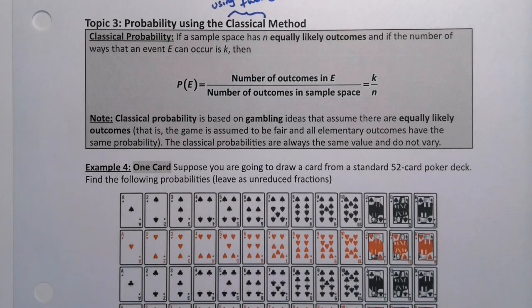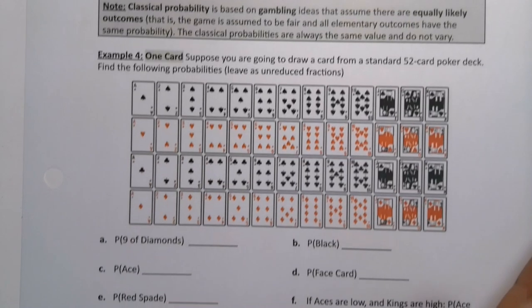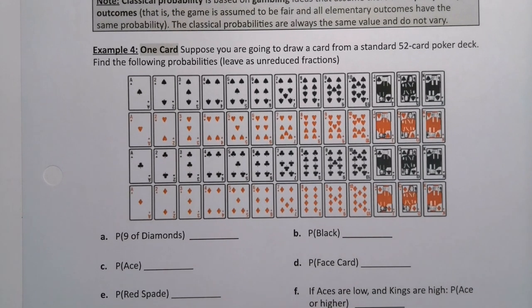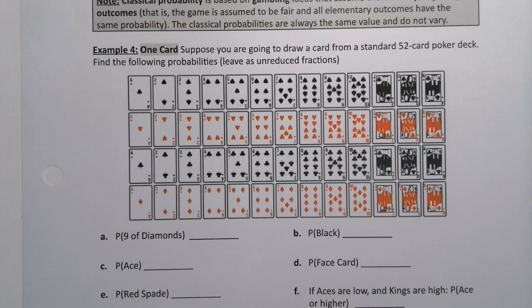Classical probability and gambling go together in that you assume the games are fair and each of the elementary outcomes has the same probability — you assume everything's equally likely. That's not always the case for classical probability; you can expand past that, but that's where we begin. For example, when you have a deck of cards, you assume every single one of those cards is equally likely. This is the 52-card deck that's a standard poker deck, which is generally the deck you're used to playing with, unless you play Euchre or Pinochle, which use a modified deck.